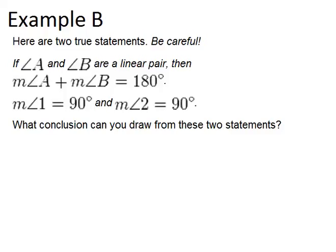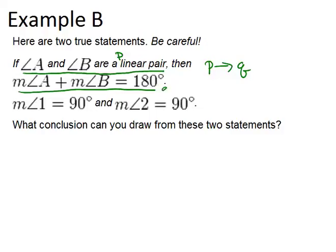Here are two true statements — be careful. If angle A and angle B are a linear pair, then the measure of angle A plus the measure of angle B equals 180 degrees. That's if P, then Q. My second statement is: measure of angle 1 equals 90 and measure of angle 2 equals 90. That doesn't seem to be either P or Q, but you can realize that if they're both 90, then angle A plus angle B must be 180 — so this is sort of like saying Q again.